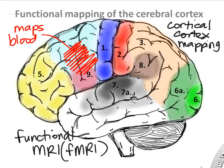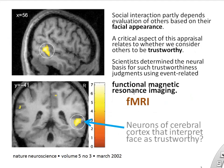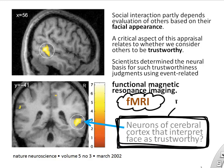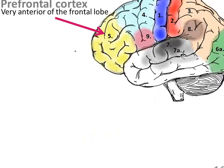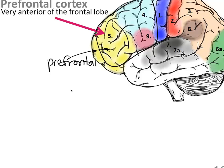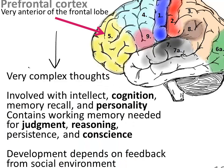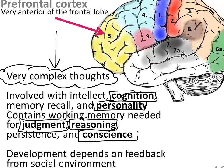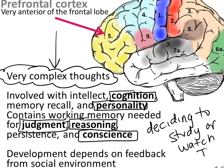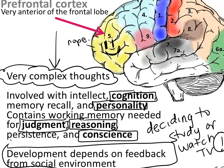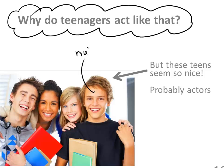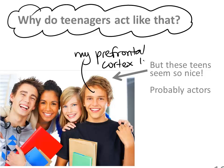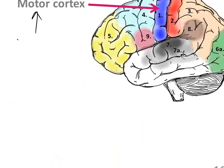Using functional MRI, researchers can map specific places in the cerebrum — they've even identified where the brain determines the trustworthiness of faces. The prefrontal cortex is involved in the most complex thoughts: reasoning, judgment, deciding whether to study or watch TV, cognition, and conscience. Interestingly, in teenagers the prefrontal cortex is still developing and remodeling, which may explain different judgment, risk-taking behavior, and personality changes.